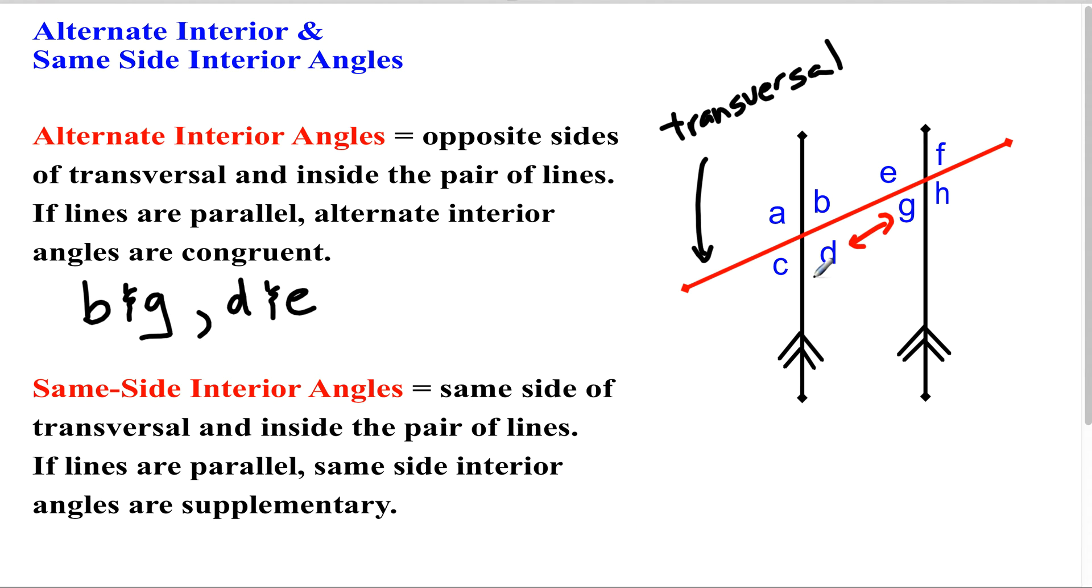D and G would be a pair. So D, and there's my G. D and G would be a pair because they're on the same side, both below the transversal and between the parallel lines.